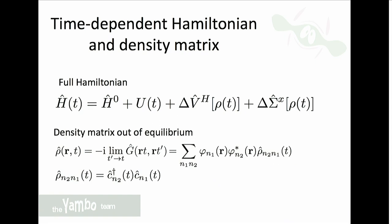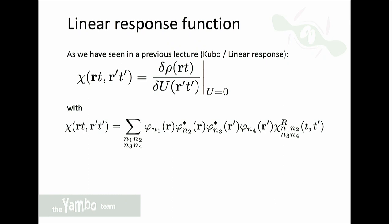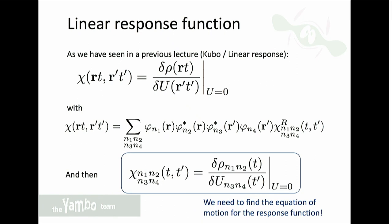We have the time-dependent density matrix, which can be found directly from the Green's function by expanding in single-particle states. We are not really interested in the density matrix per se but in the response function — as seen in the linear response Kubo formula, this is the variation of the density matrix with respect to the external field. It can be expanded in a single-particle basis set and will depend on four single-particle indices.